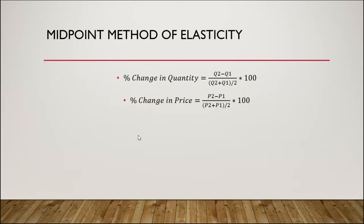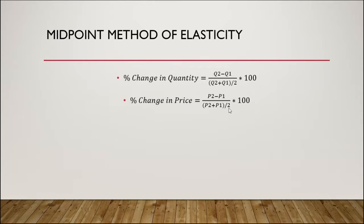There are multiple ways of calculating elasticity. For our purposes, we're going to simply use the midpoint method. If you were to go on and study economics at a higher level, you would learn the more precise method involving calculus. We're going to simply do the midpoint method — it's good enough for our purposes. The midpoint method calculates the percent change in quantity by taking the new quantity minus the old quantity, divided by the average of the two, times 100. We do the same thing with price, put these two ratios over one another, and we get a measurement of elasticity.